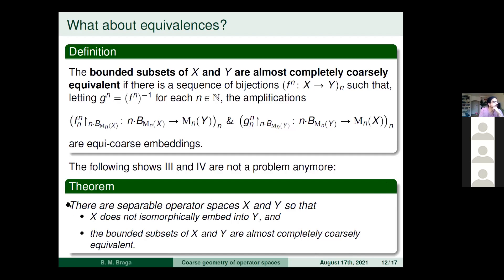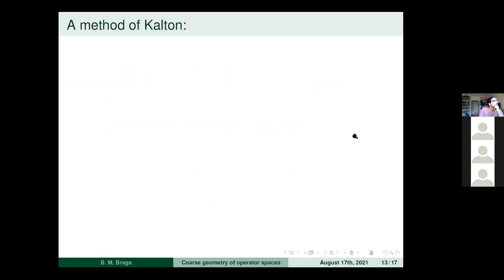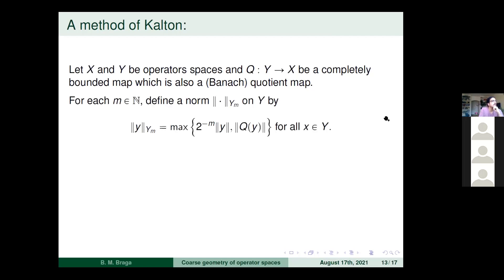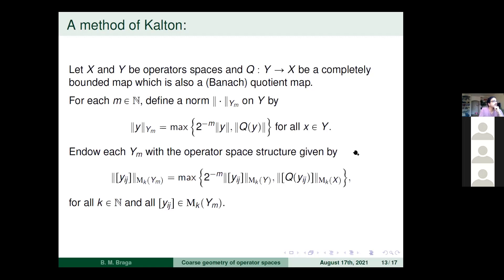I'll explain the method — which is due to Kalton — without going into why it works. You start by looking at a quotient map from Y to X: a completely bounded map from Y to X which is also a quotient map as a Banach space. Then you give a sequence of equivalent norms to Y by defining them via scalar multiples involving this map.